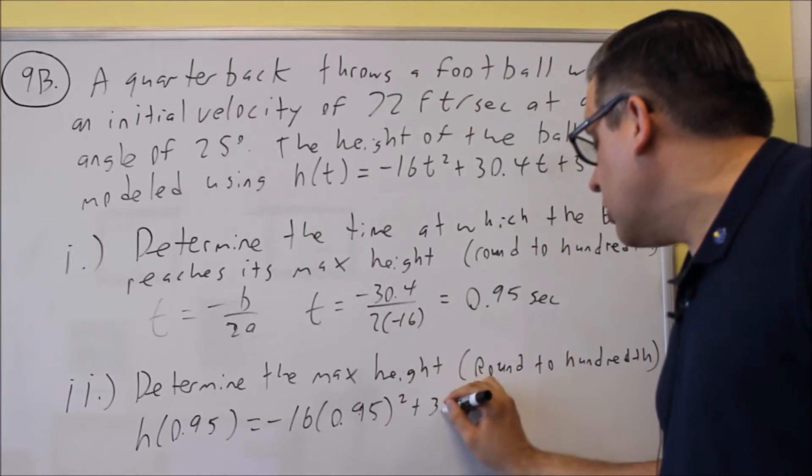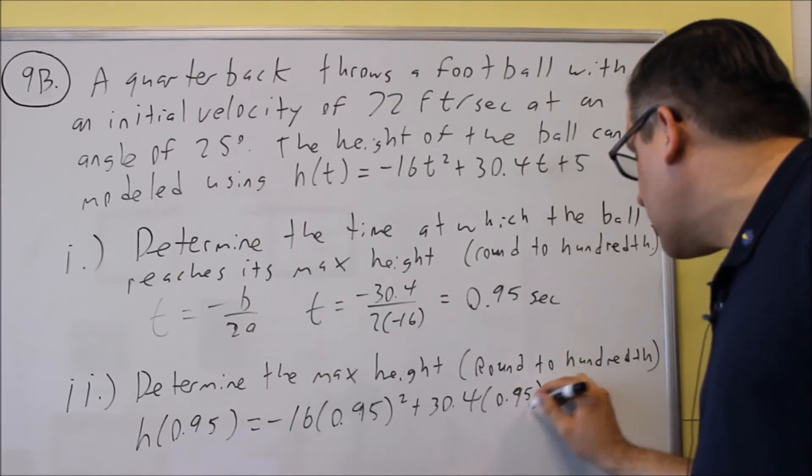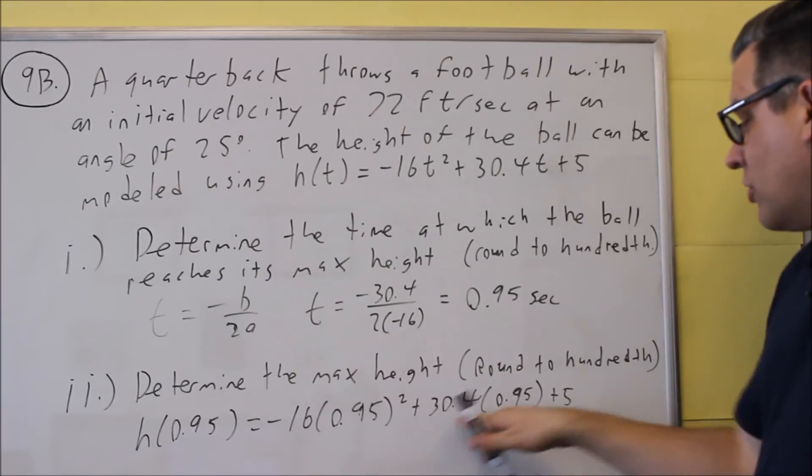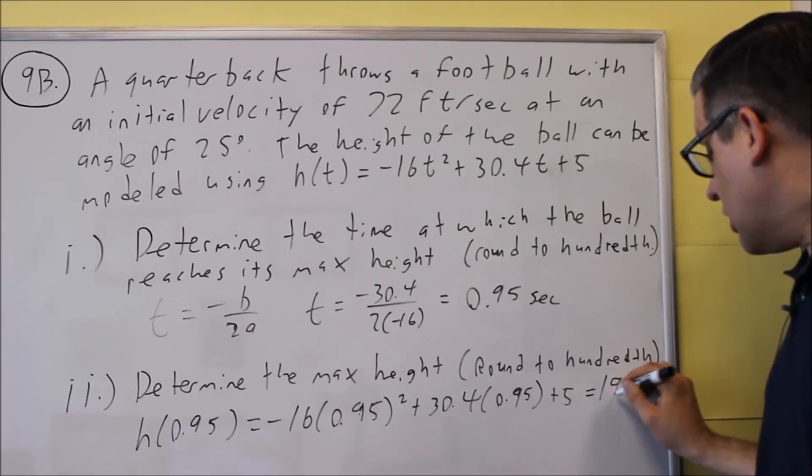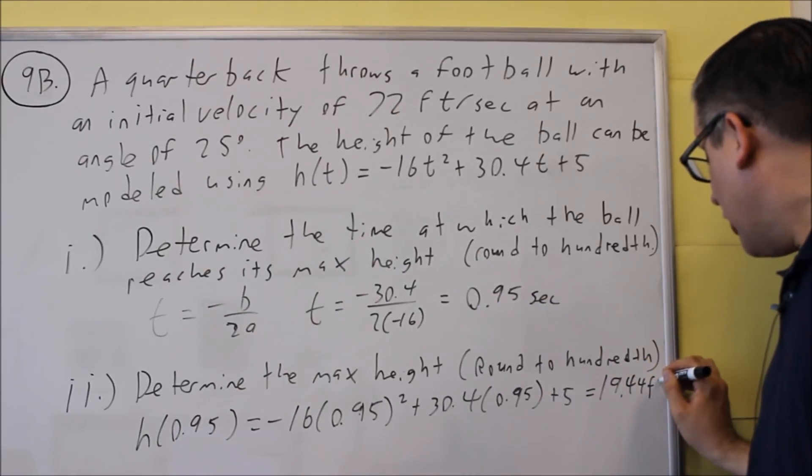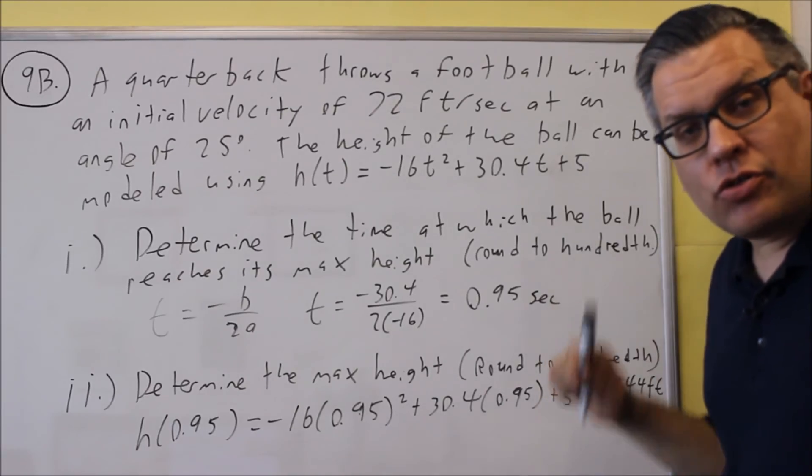So, there's 2 places that we're going to put this in. And then you want to just put this in your calculator to get the answer. So, we put 0.95 in squared, and we do all that. When you put that all into your calculator, what you're going to get as a result is 19.44 feet.